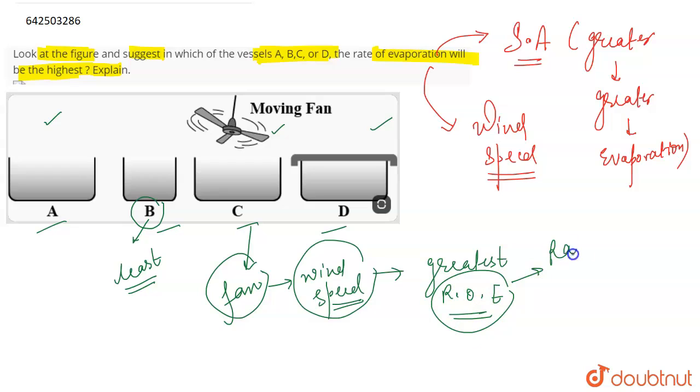The rate of evaporation is the maximum or the highest in C, because of the moving fan.